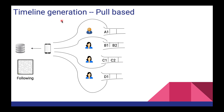In timeline generation, we are going to look at two approaches: pull-based and push-based. In the pull-based approach, whenever a user opens Instagram and asks for his timeline, we hit the database, get his following list, fetch the recent posts from all his followings, and display them to the user. This is a very time-consuming approach because whenever the user starts Instagram and asks for the timeline, we are going and fetching all the posts at that time. This can definitely be improved.